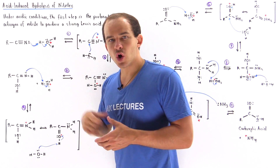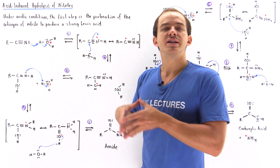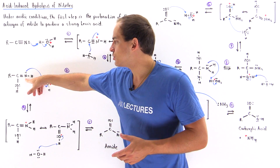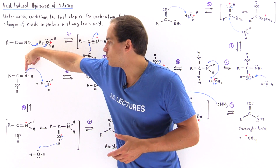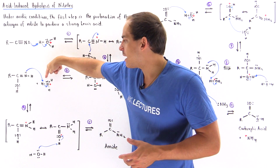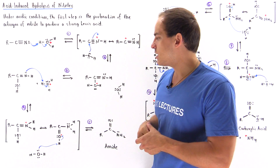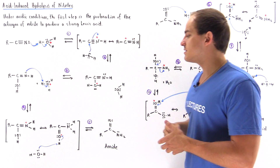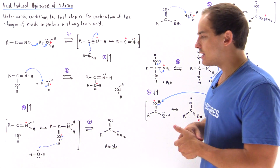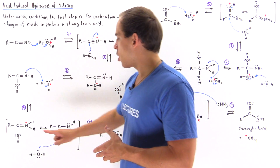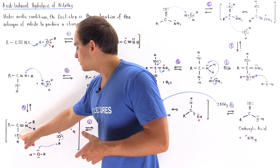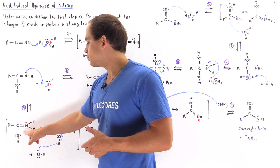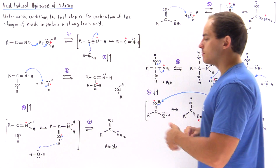The hydronium protonates the nitrogen of our molecule. This nitrogen contains a lone pair of electrons and grabs the H off of the hydronium. In step four, we form our resonance-stabilized intermediate where the positive charge is delocalized among the nitrogen and the oxygen.